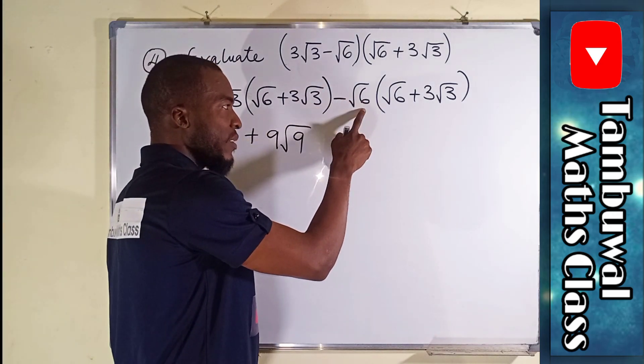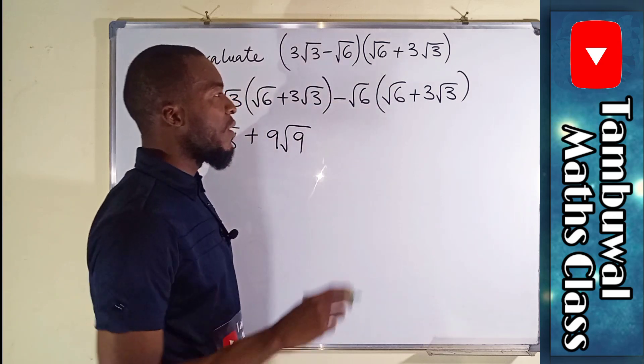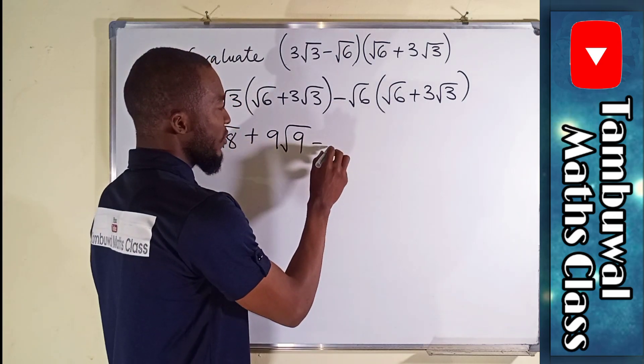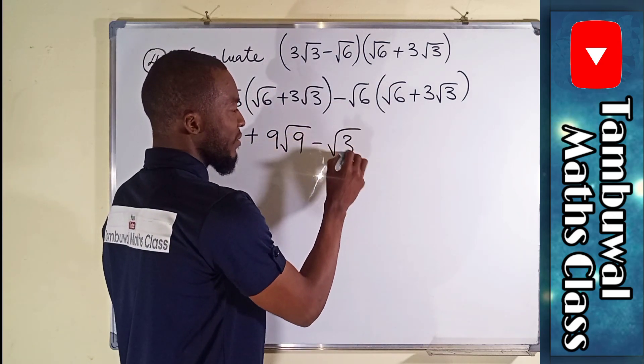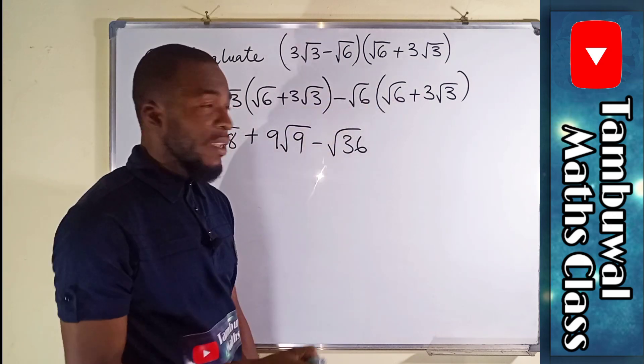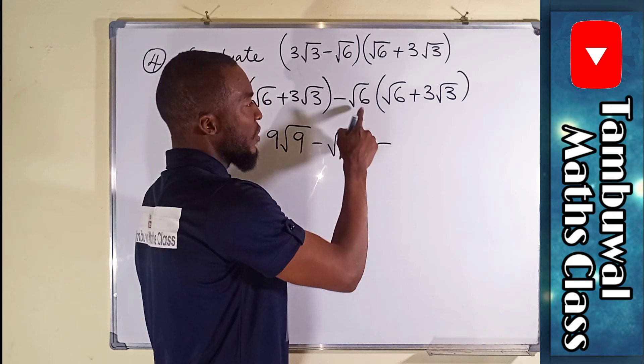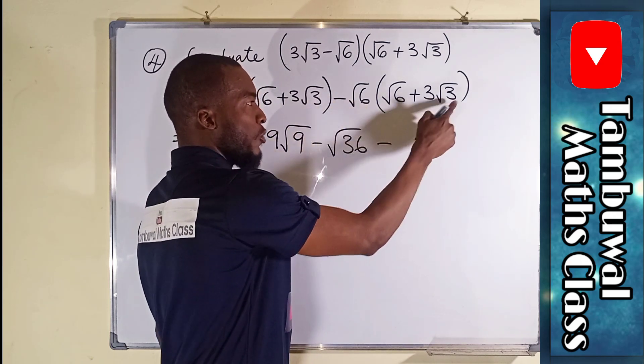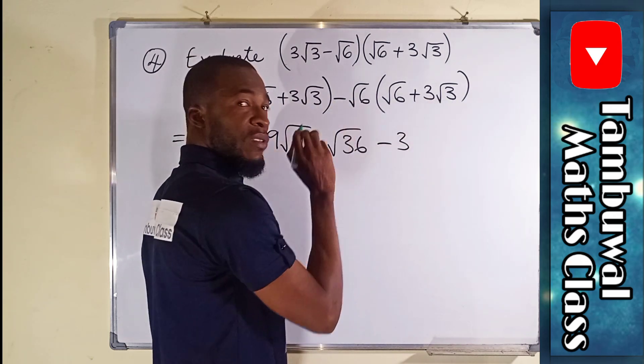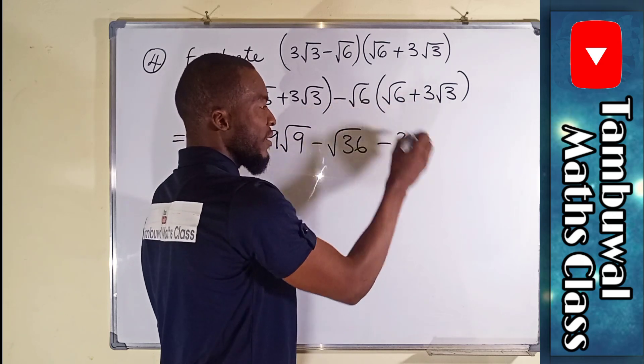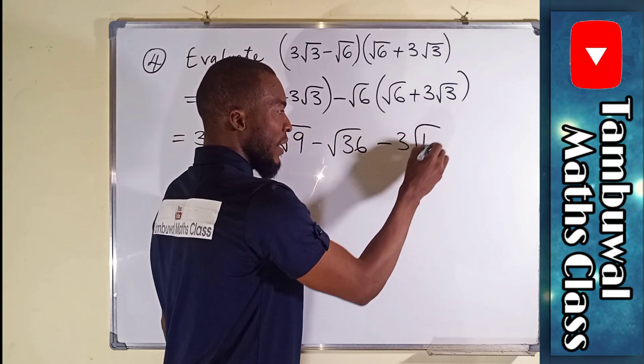√6 times √6 is minus √36 altogether because 6 times 6 is 36. The minus will carry through, so we have √6 times 3√3, where 3 remains constant and 6 times 3 is 18, so we have -3√18 here.